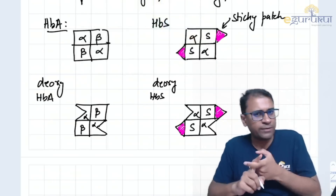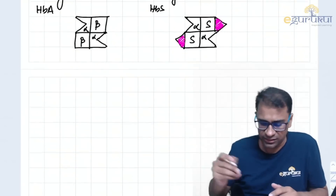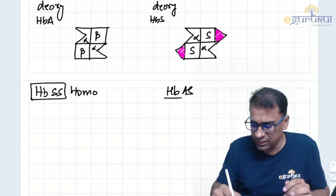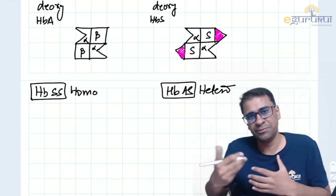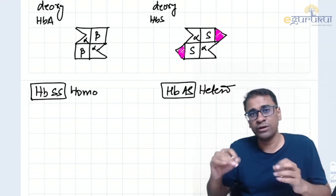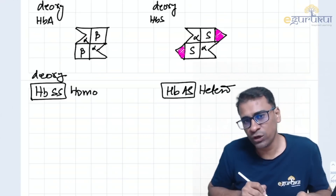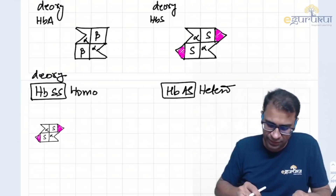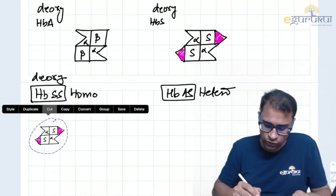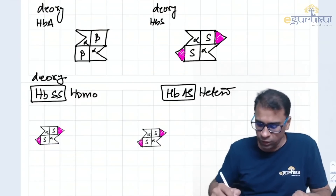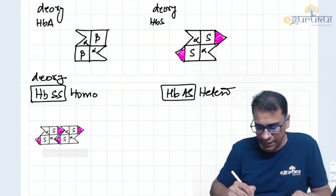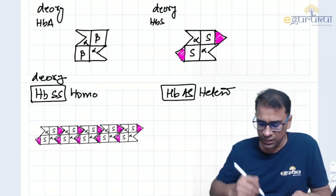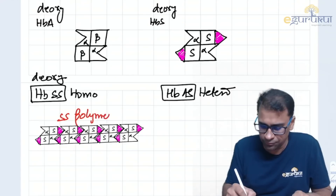Consider two types: homozygous HbSS and heterozygous HbAS (50% HbA and 50% HbS). This whole story starts only when the hemoglobin gets deoxygenated. In HbSS, the first deoxy HbS molecule attaches to the second HbS, then the third, and so on — making a long indefinite-length polymeric chain called the SS polymer.